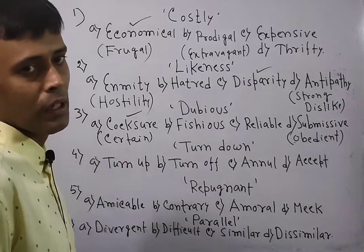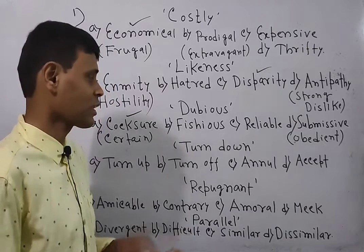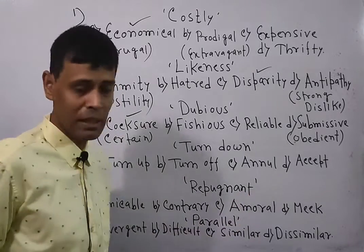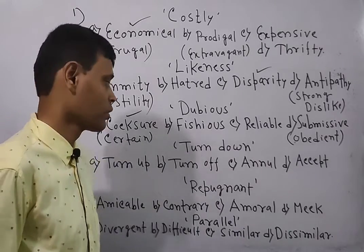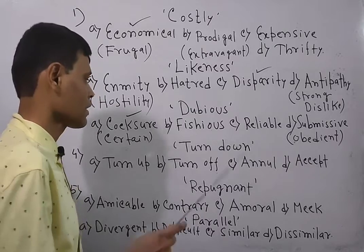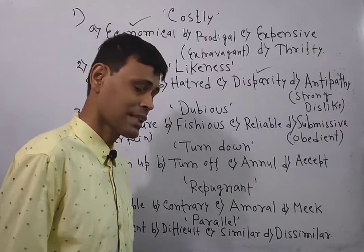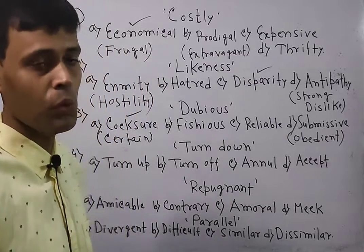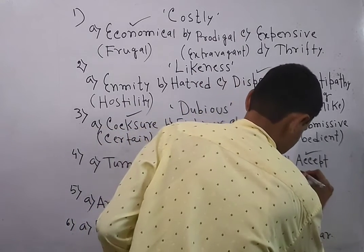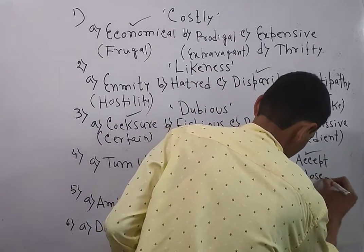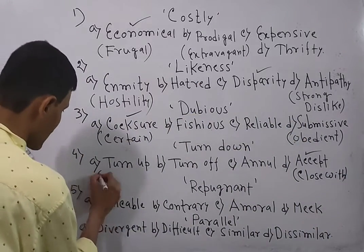So if turn down means reject, its opposite should be accepting or something like close with. Instead of accept, close with might have been the option. Close with also means accept. So turn down, turn off means appear, turn off means switch off or stop. Annul means reject. Accept means the opposite to turn down. So this will be the answer here. You can say it means close with.